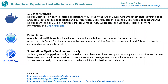Hello everyone. Today we're going to discuss how to install Kubeflow Pipeline locally on your Windows machine. To install it, there are certain prerequisites because Kubeflow works on clusters, so we need a local cluster setup. We'll be installing prerequisites one by one: first Docker Desktop, then Minikube, and then on top of that we'll install the Kubeflow Pipeline.